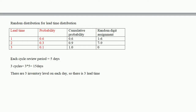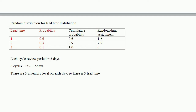Each cycle has a review period of 5 days. We perform three cycles, so 3 × 5 = 15 days total to simulate. There are three lead time values — one for each cycle — and these are also given in the question. Now let us start the simulation table.